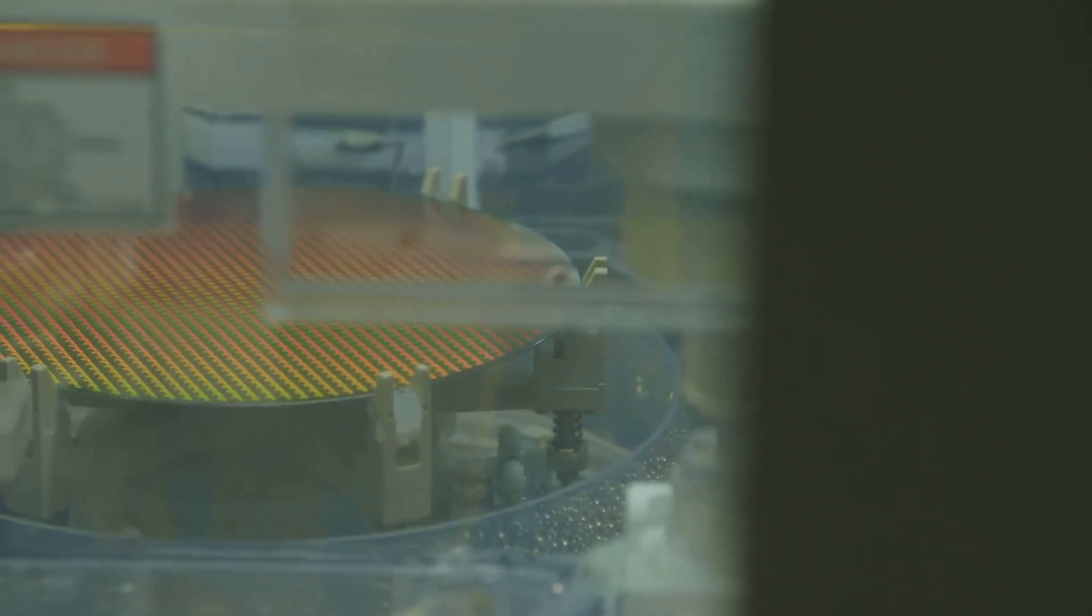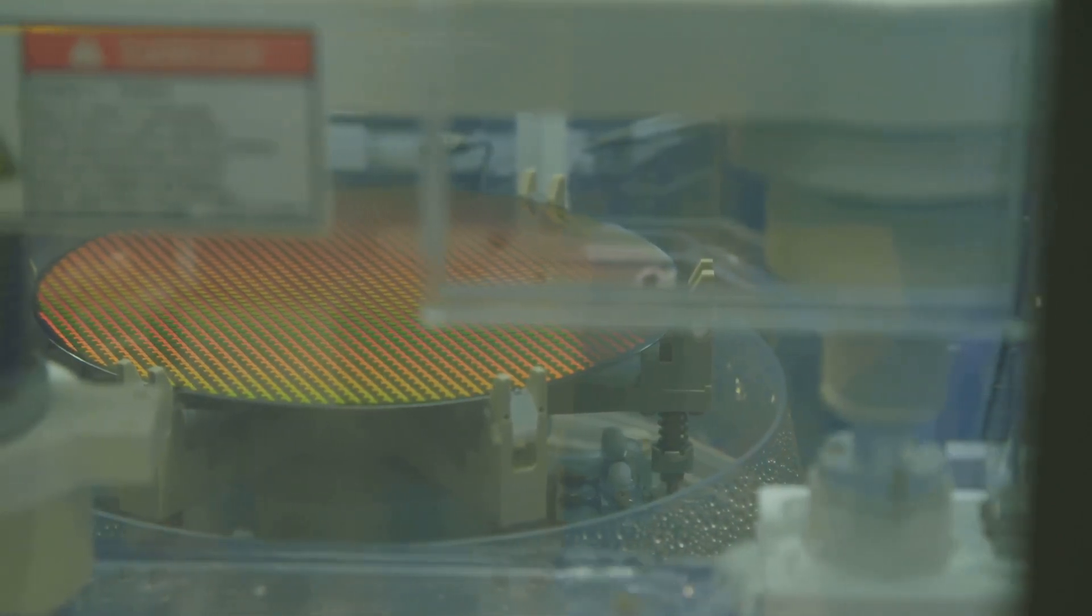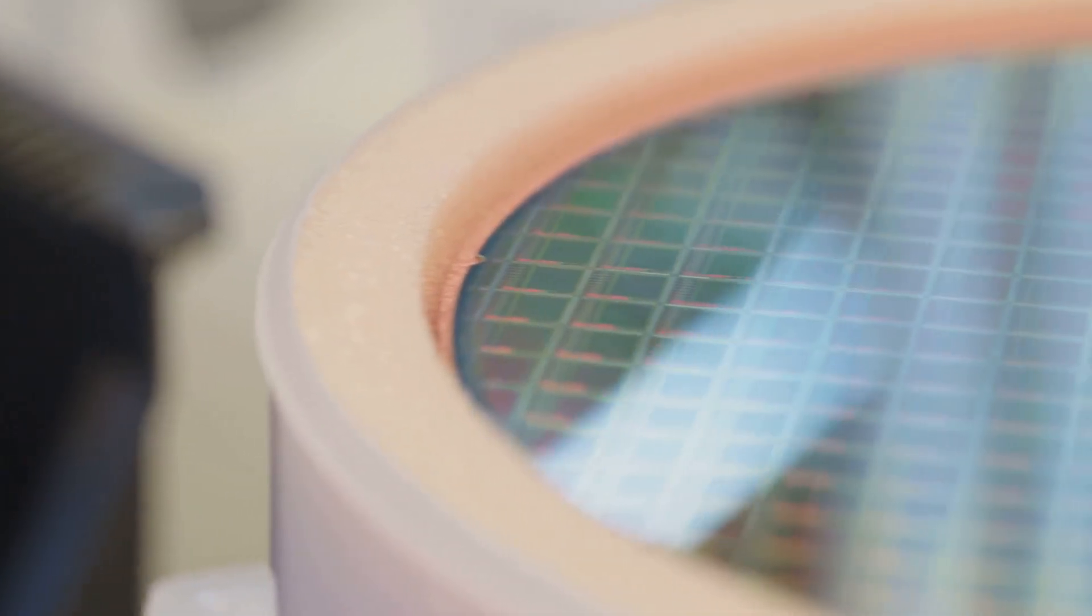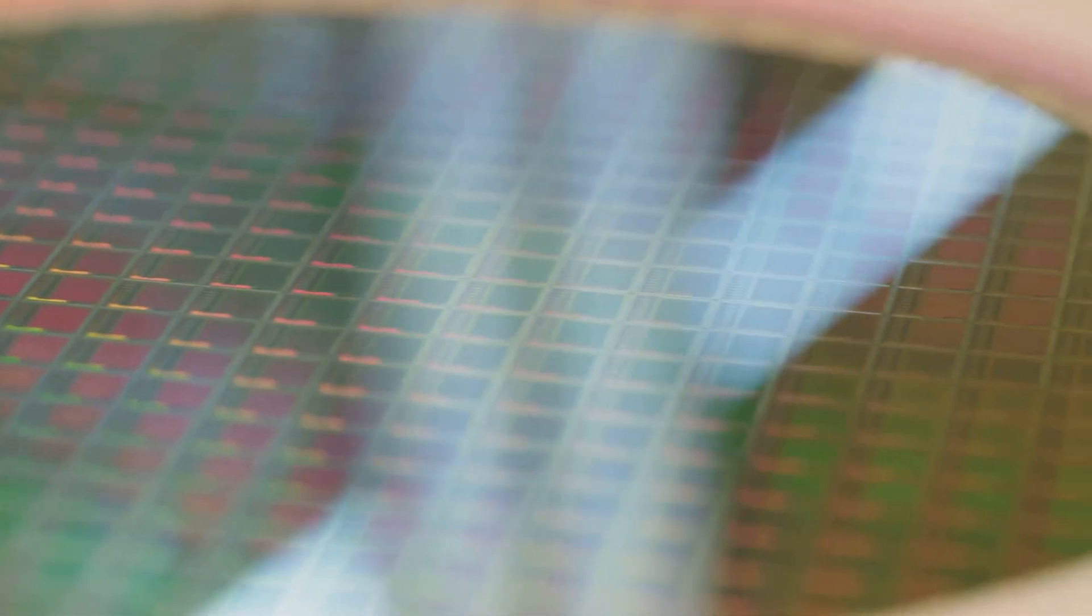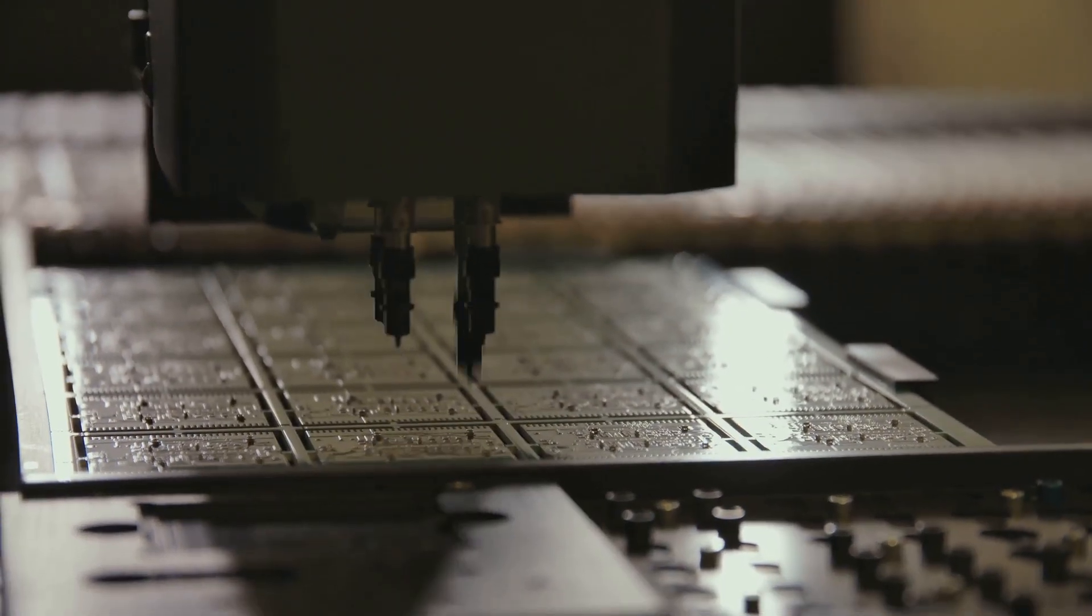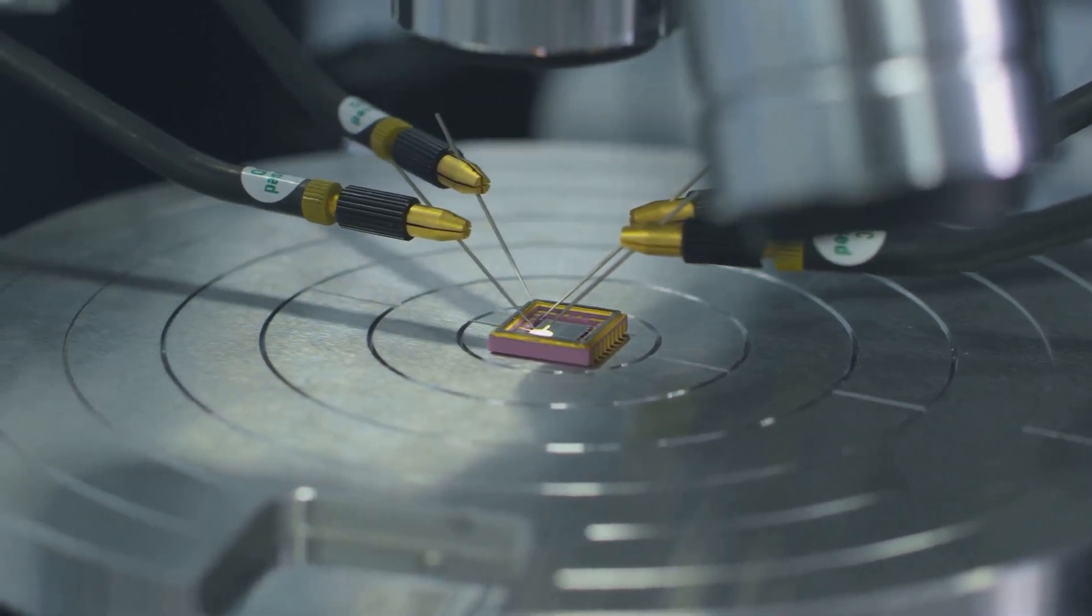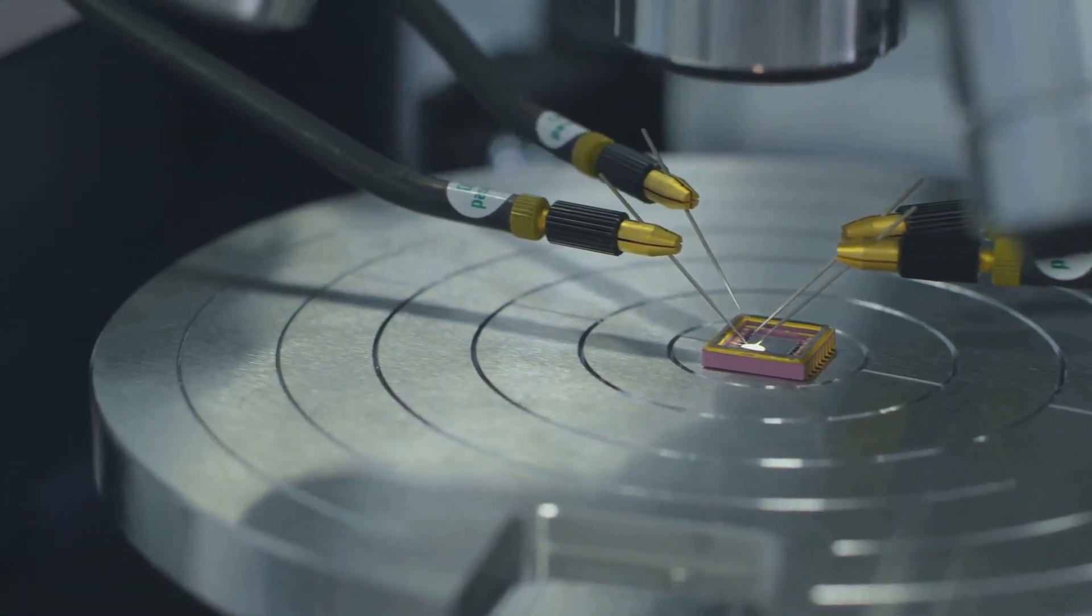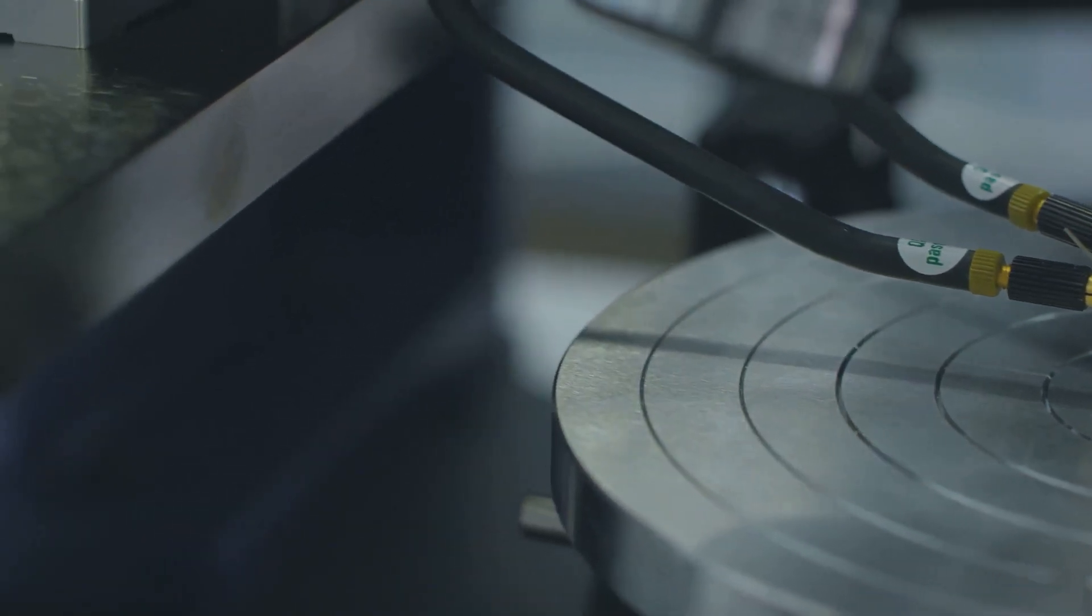Finally, the light passes through a blueprint of the circuit pattern called a mask, and focuses onto a silicon wafer coated with a light-sensitive material. This step is where the magic happens, as the light transfers the intricate design onto the wafer with incredible precision. This process repeats thousands of times, layer upon layer, to create the intricate three-dimensional structures of modern microchips. Each layer must align perfectly with the previous ones, requiring an extraordinary level of accuracy and control.